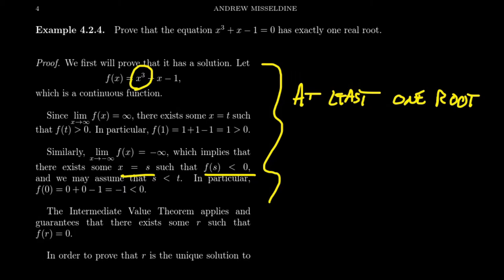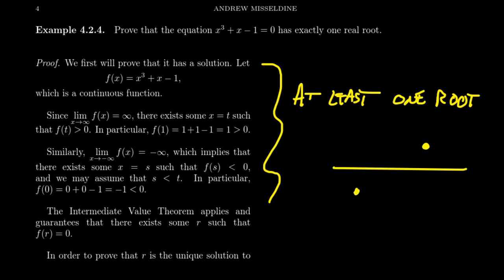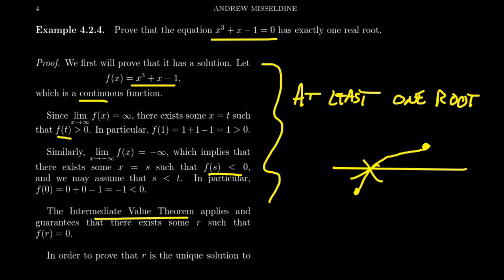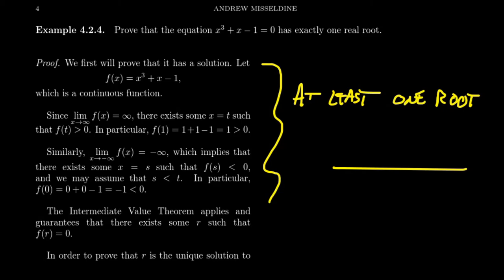So we see that our function is somewhere positive and somewhere negative. Because it's a continuous function that is somewhere positive and somewhere negative, by the intermediate value theorem, somewhere we must cross the x-axis. Crossing the x-axis gives us an x-intercept of f of x, which is a solution to the original equation. There's some number r such that f of r equals 0, giving us a solution. This shows it has at least one solution.